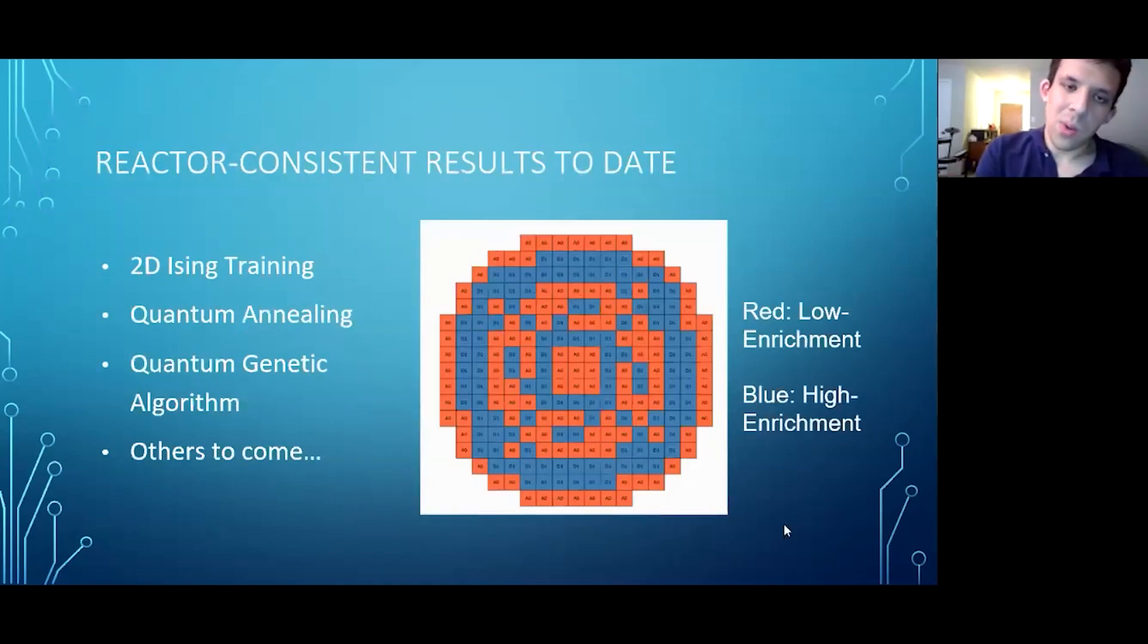We have here one of the results from the quantum genetic algorithm, and it combines features of both checkerboard style and in-out loading patterns with low neutron leakage on the periphery.